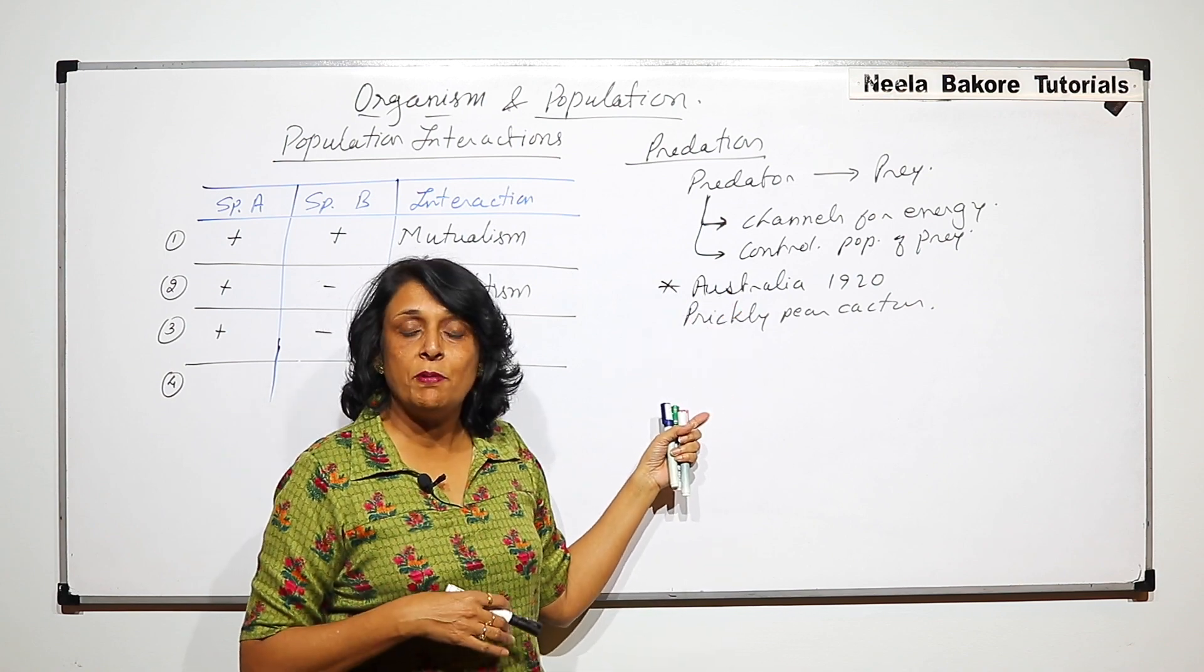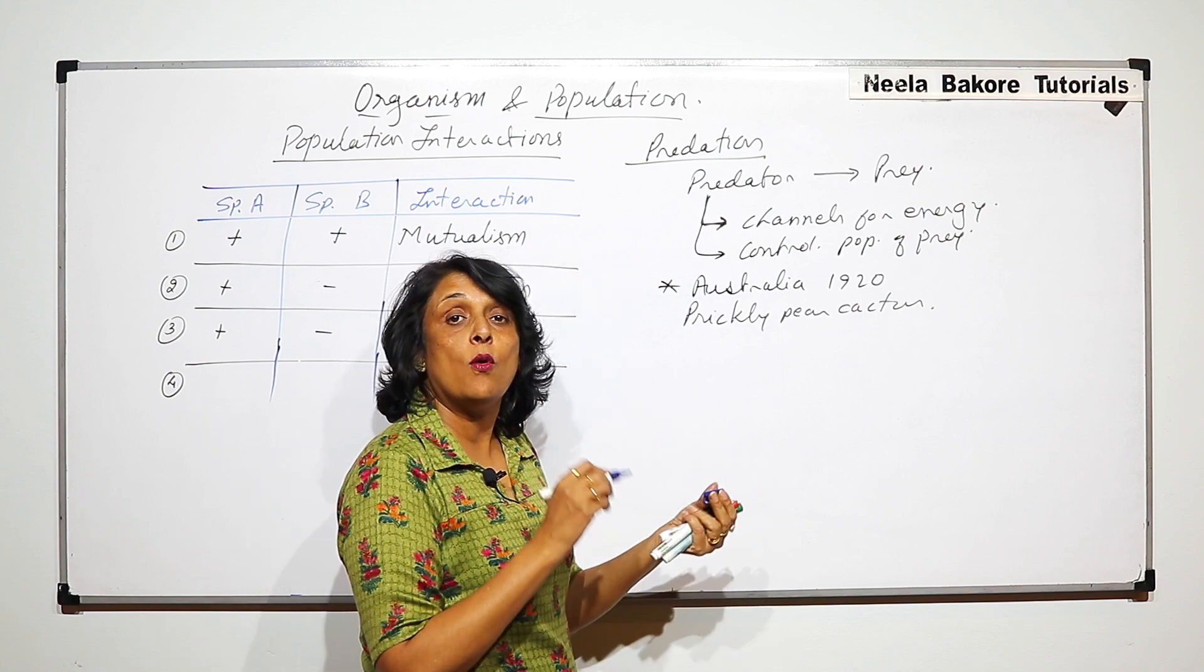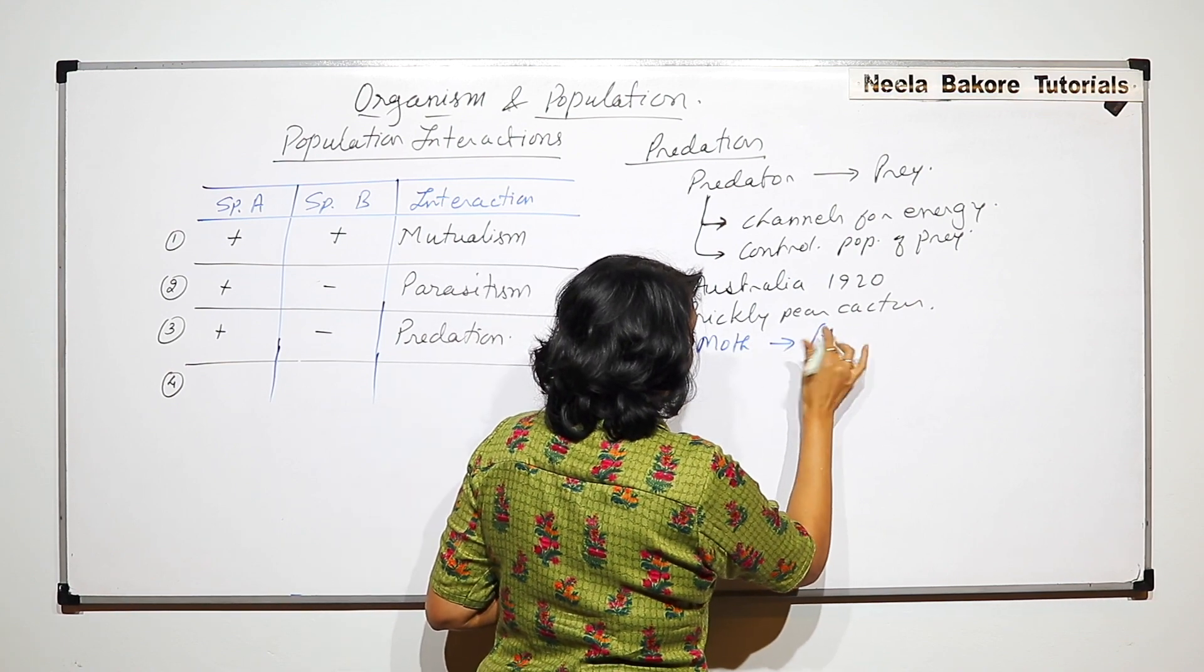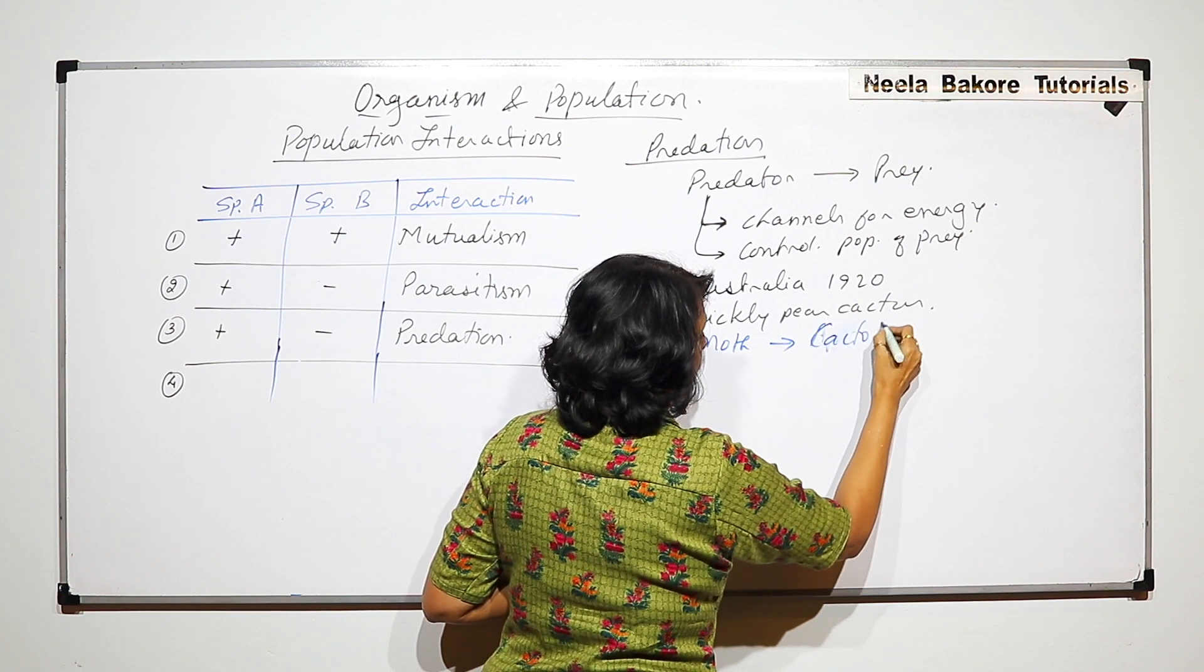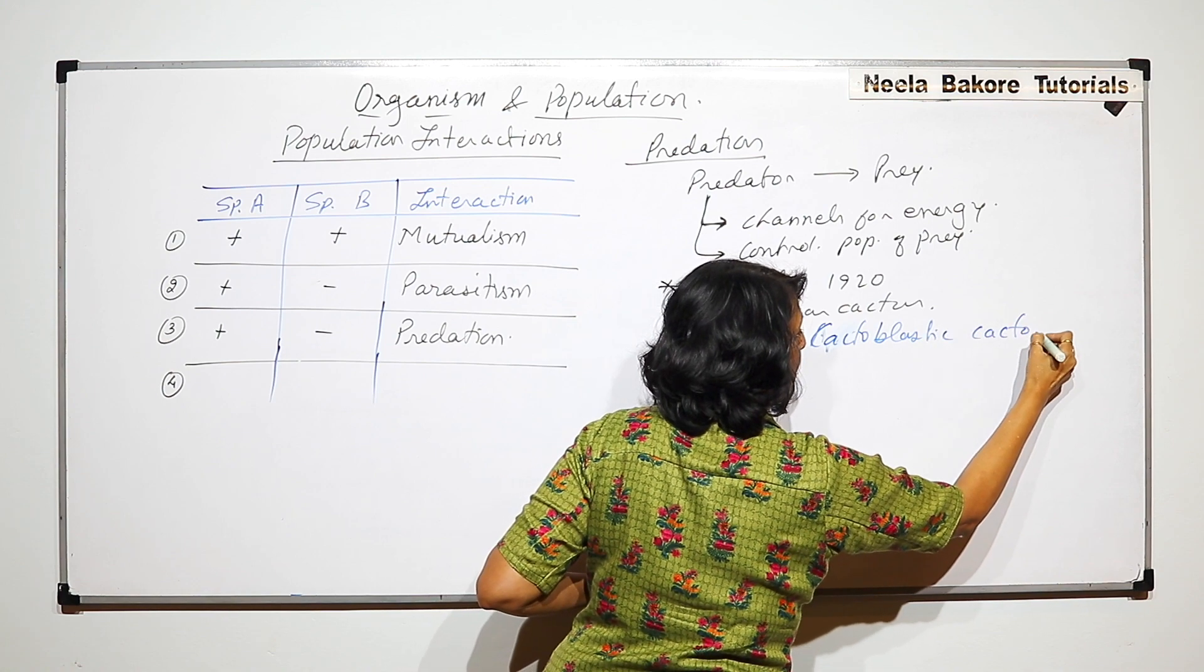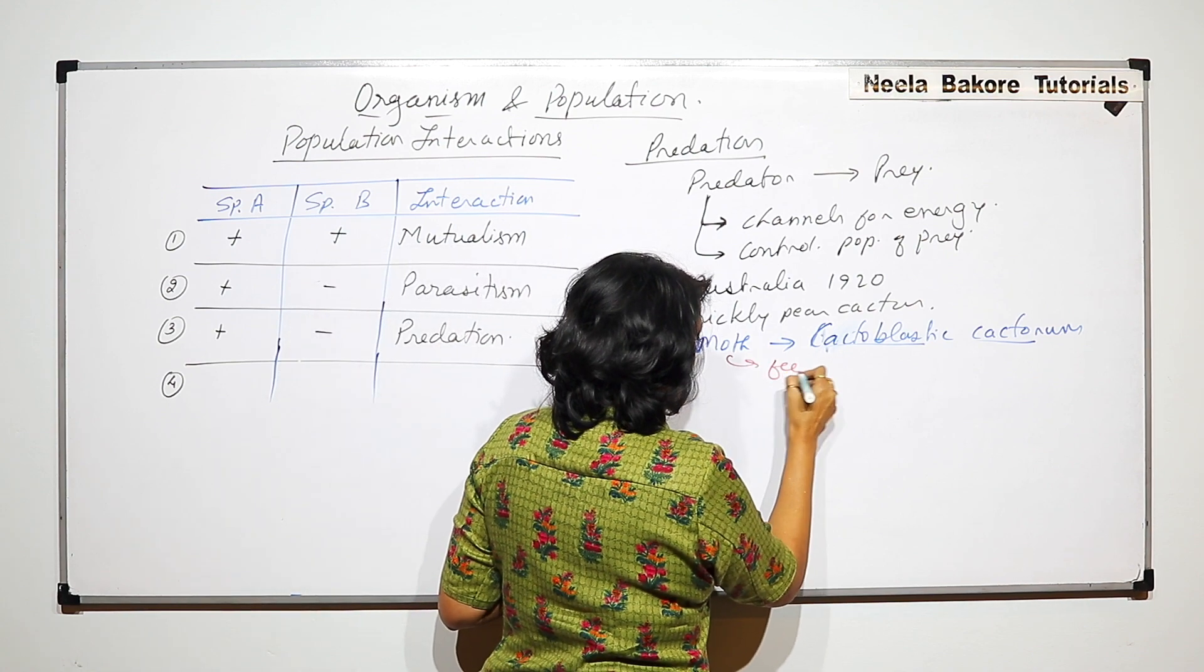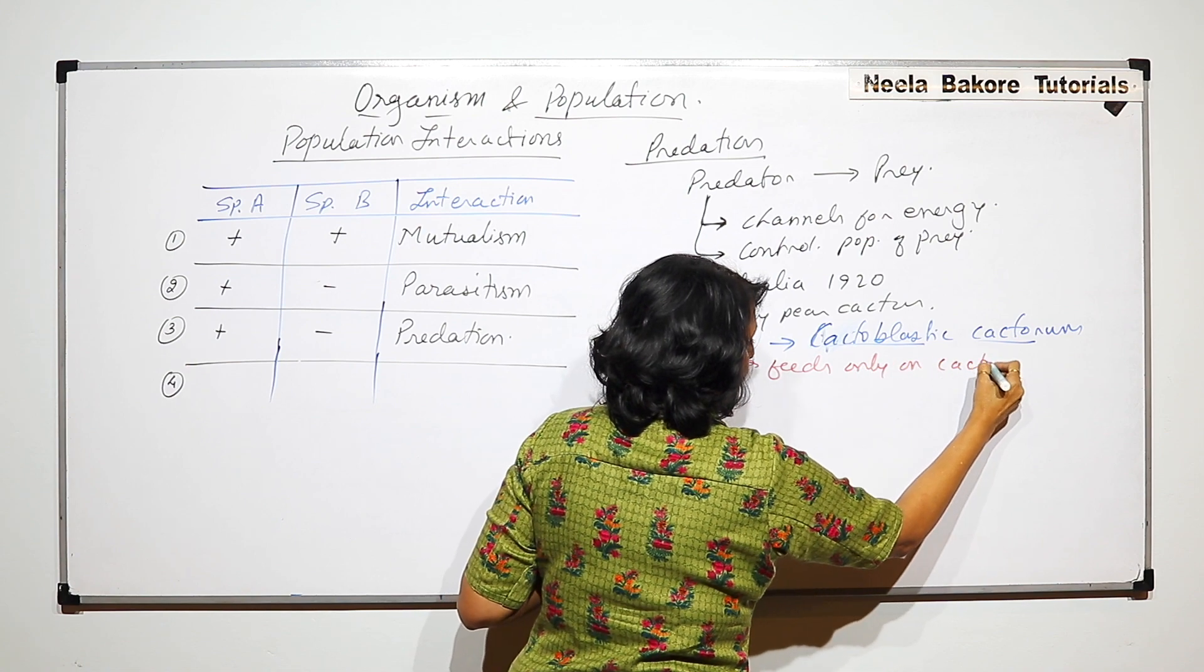Because there was no check on the number of these cactus plants, their number increased in an uncontrolled manner. The Australian government had to introduce a moth which was feeding only on cactus. A moth was introduced, its name was Cactoblastus cactorum, and this moth feeds only on cactus.